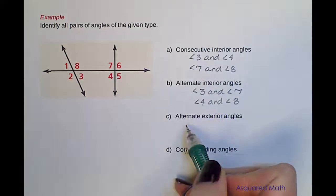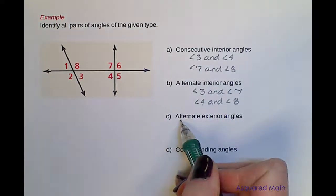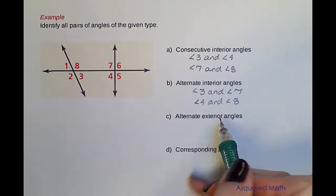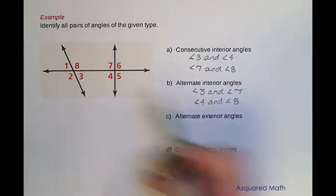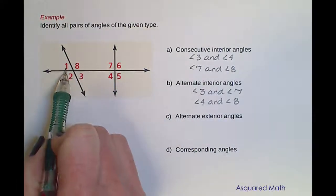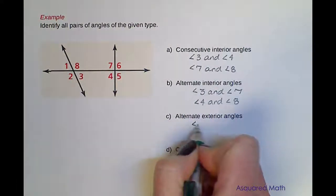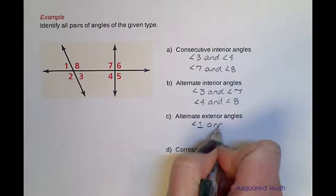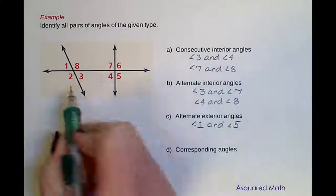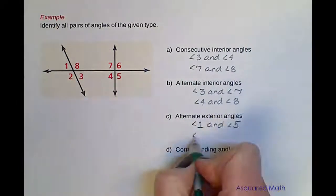Part C: alternate exterior angles — opposite sides of the transversal, on the outside of the two lines. So we are looking at angles 1 and 5, as well as angles 2 and 6.